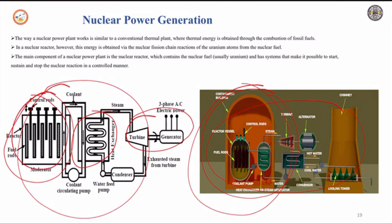The control rods absorb the neutrons. The heat generated inside the reactor is taken out of the chamber with the help of the coolant, which will be either liquid sodium or gaseous fluids. The steam then drives the turbine, and the exhaust steam from the turbine is cooled using a condenser, and the same water is again used for generating the steam.